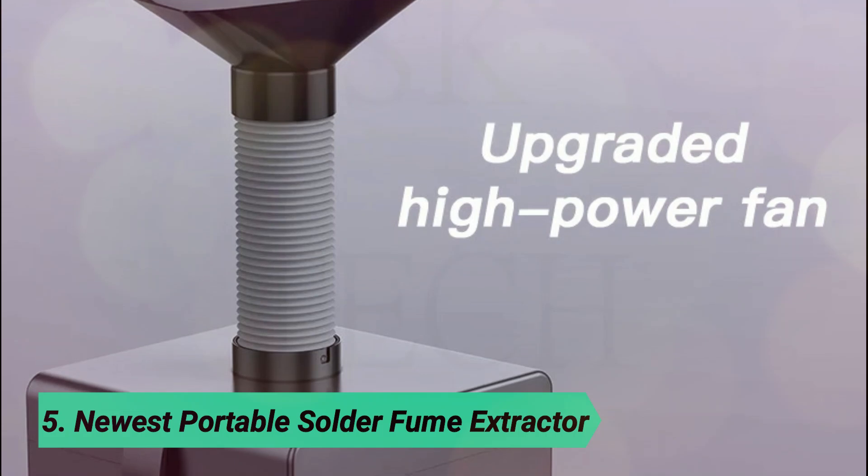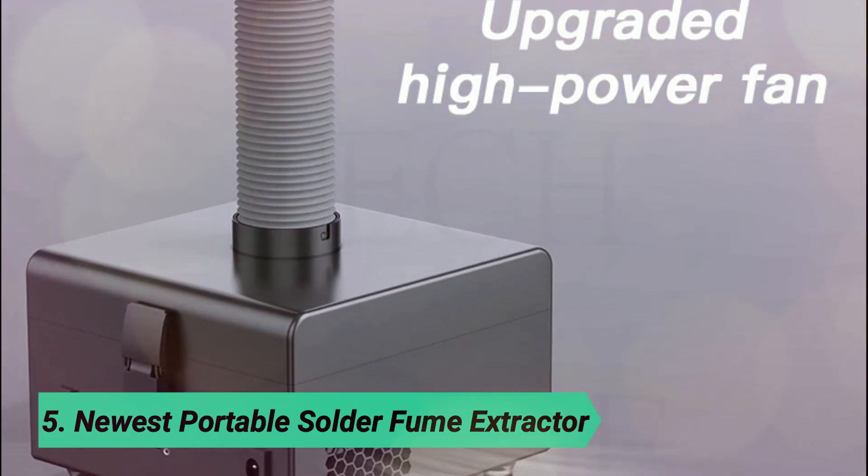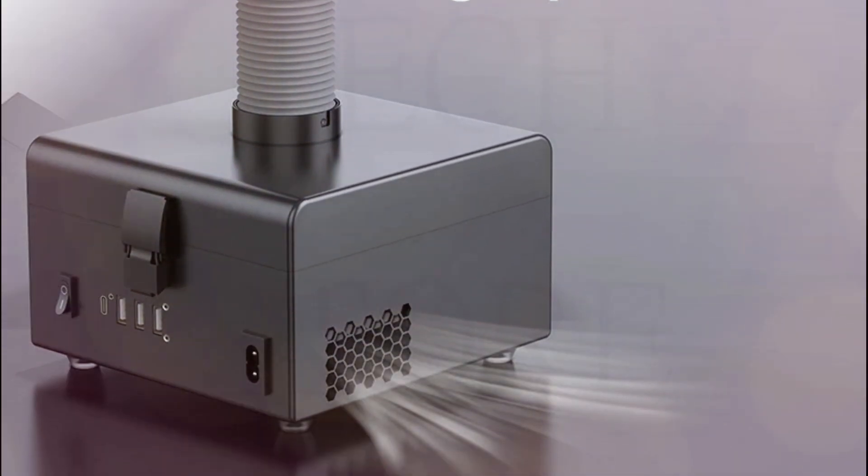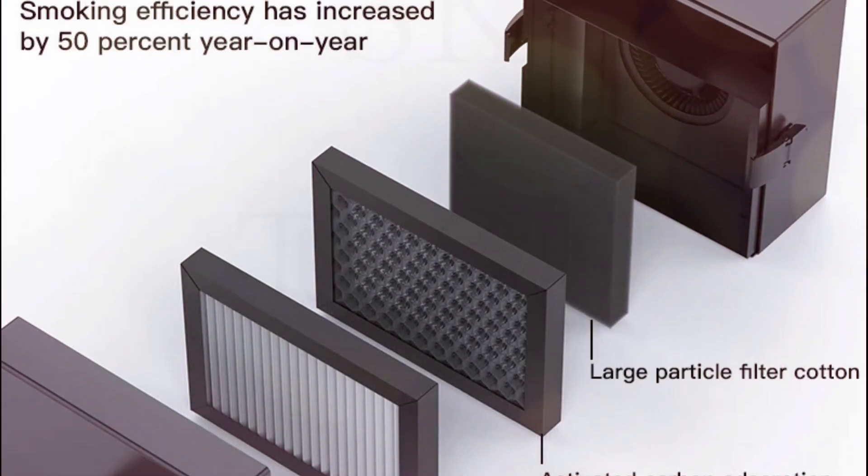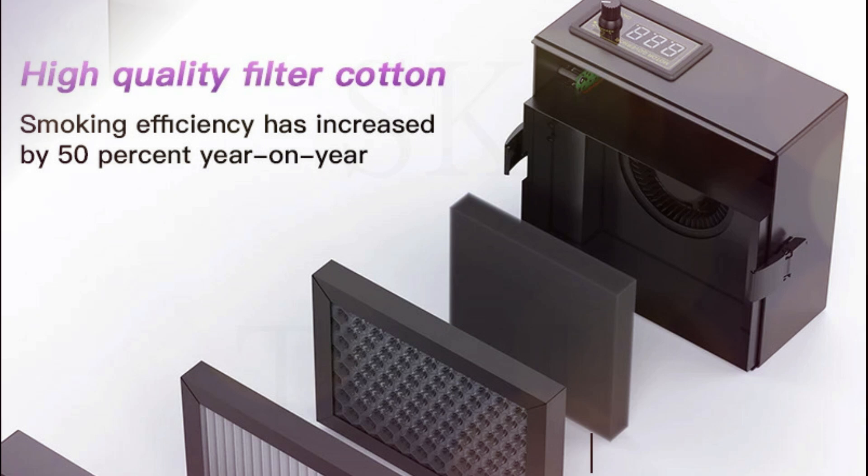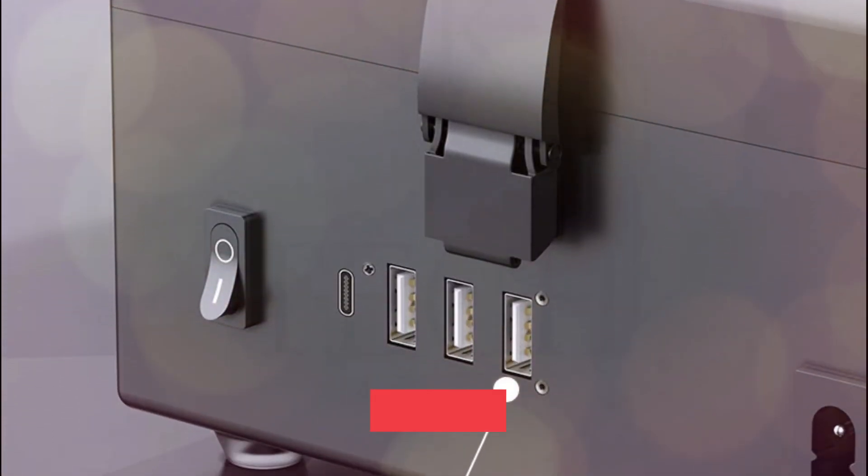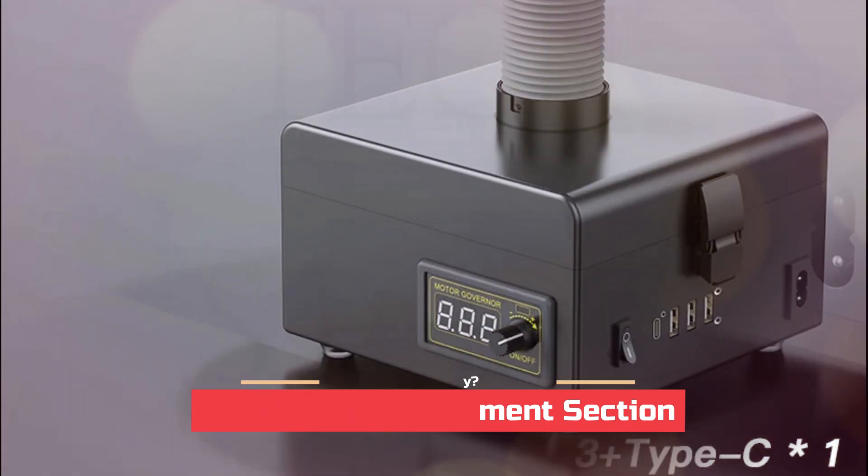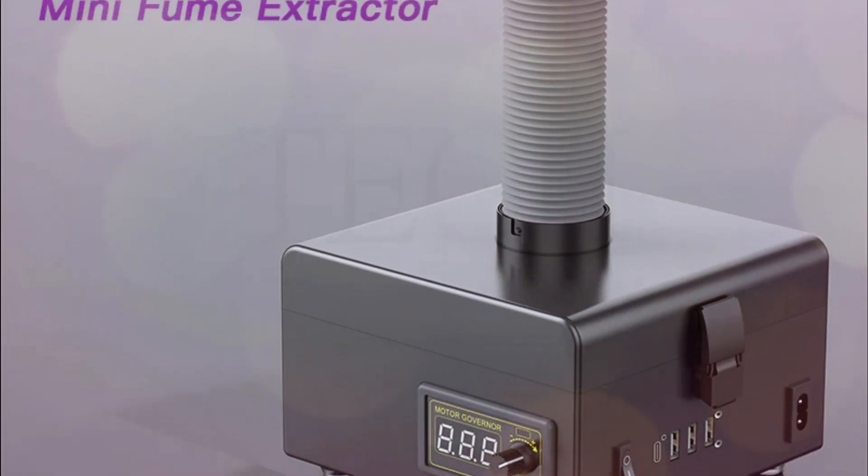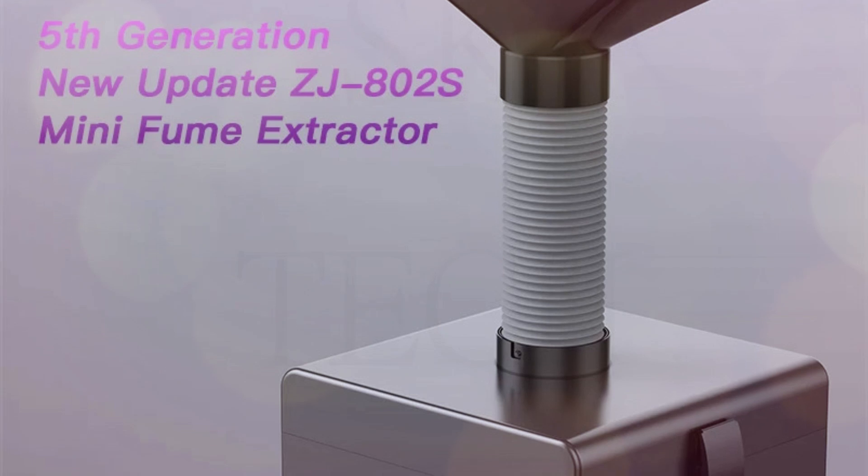At number 5, newest portable solder fume extractor. The ZJ802S Mini Fume Extractor is a powerful upgrade for a cleaner workspace. Equipped with a high-power fan, it efficiently removes smoke and harmful particles. With a third-generation fan and high-quality filter cotton, its filtration efficiency has increased by 50% compared to previous models.